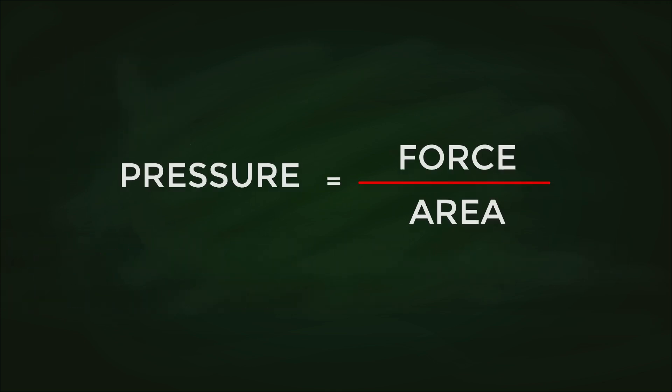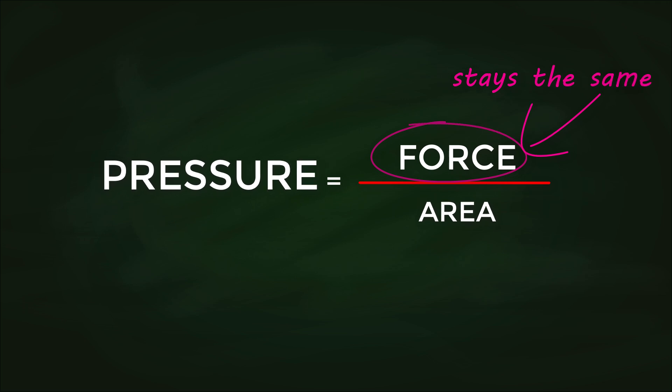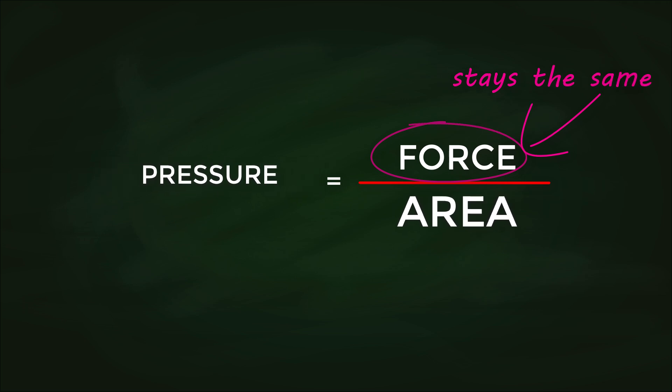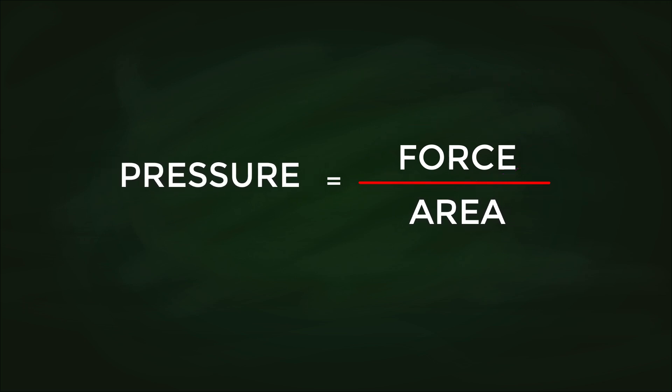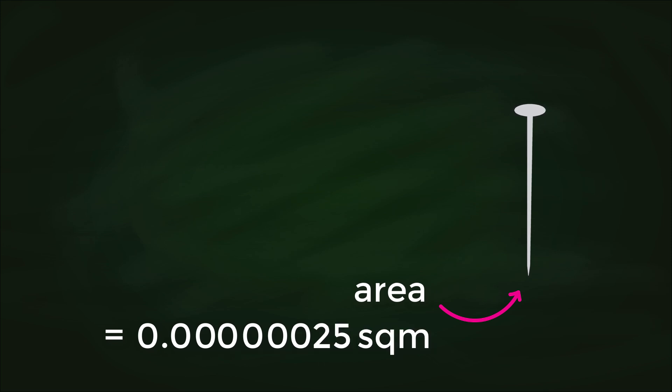Something else we learned in our previous video is that the same force can exert different levels of pressure depending on the size of the area it's being applied to. Take this pin for example. At its very tip, it has an area of approximately 0.00000025 square meters. That is, it's really really small.